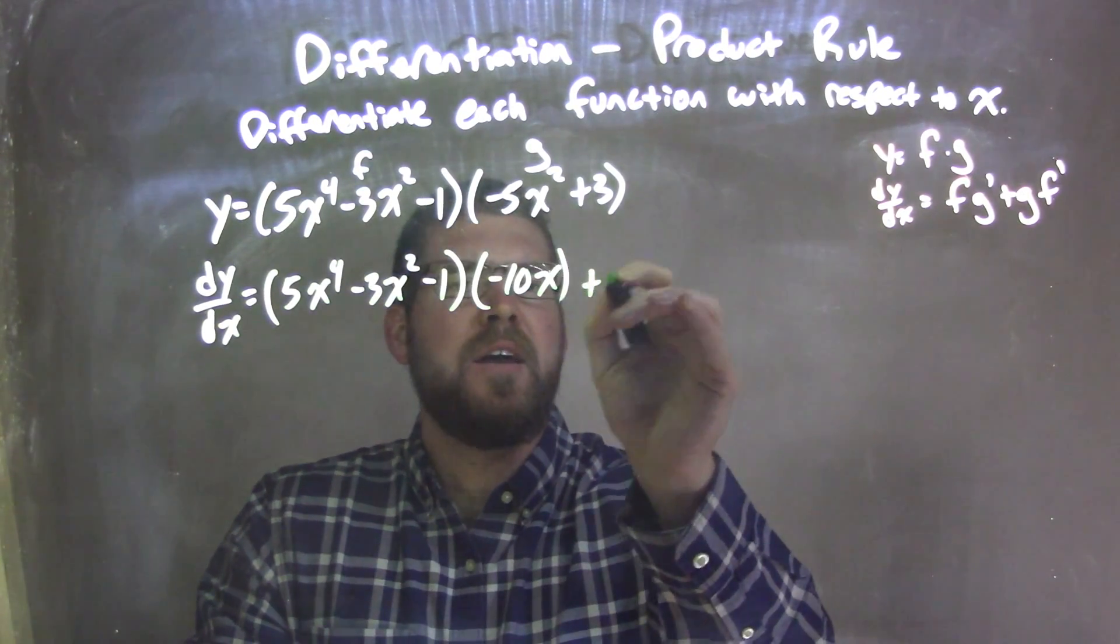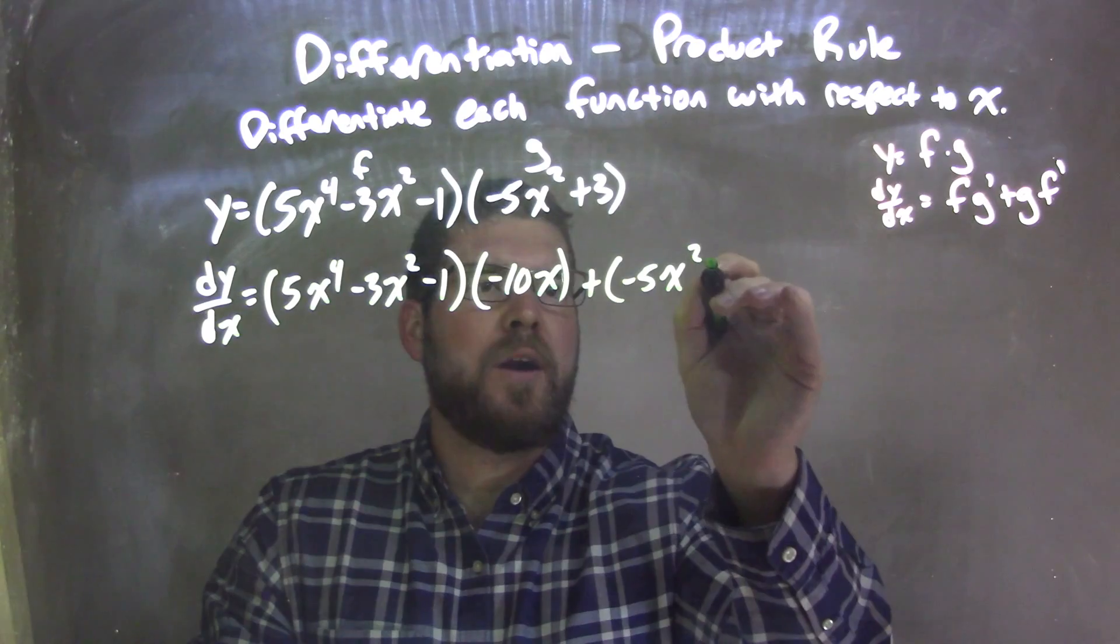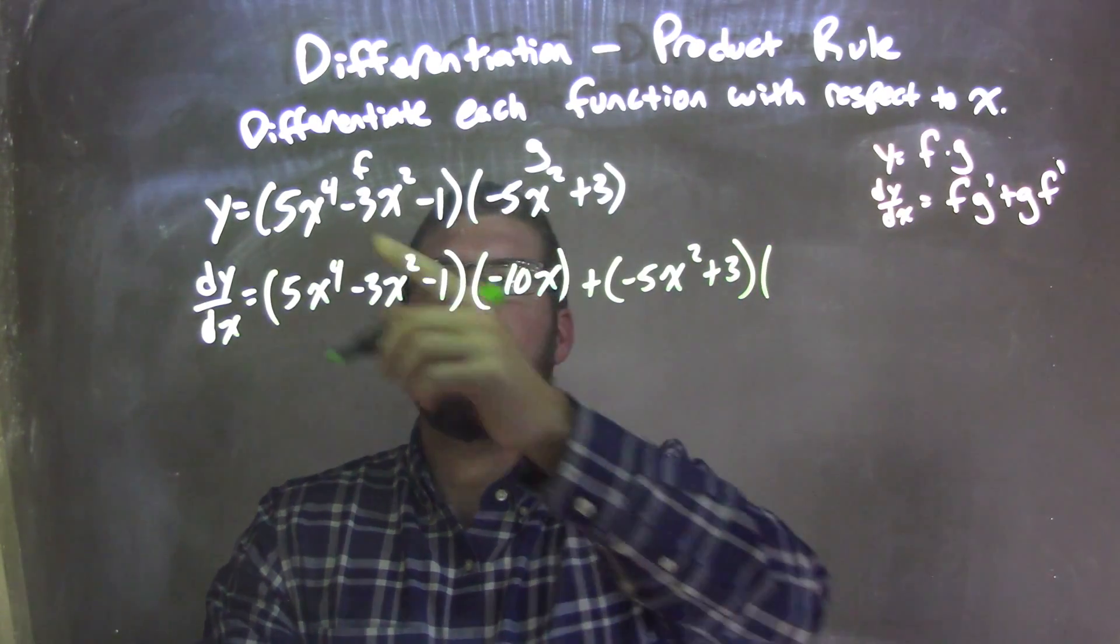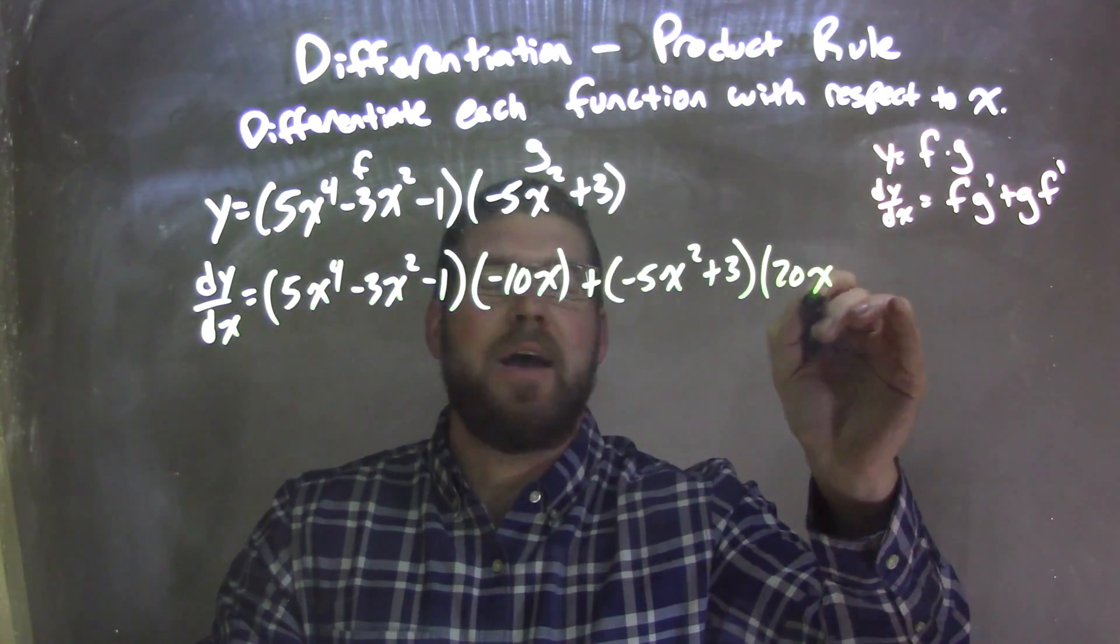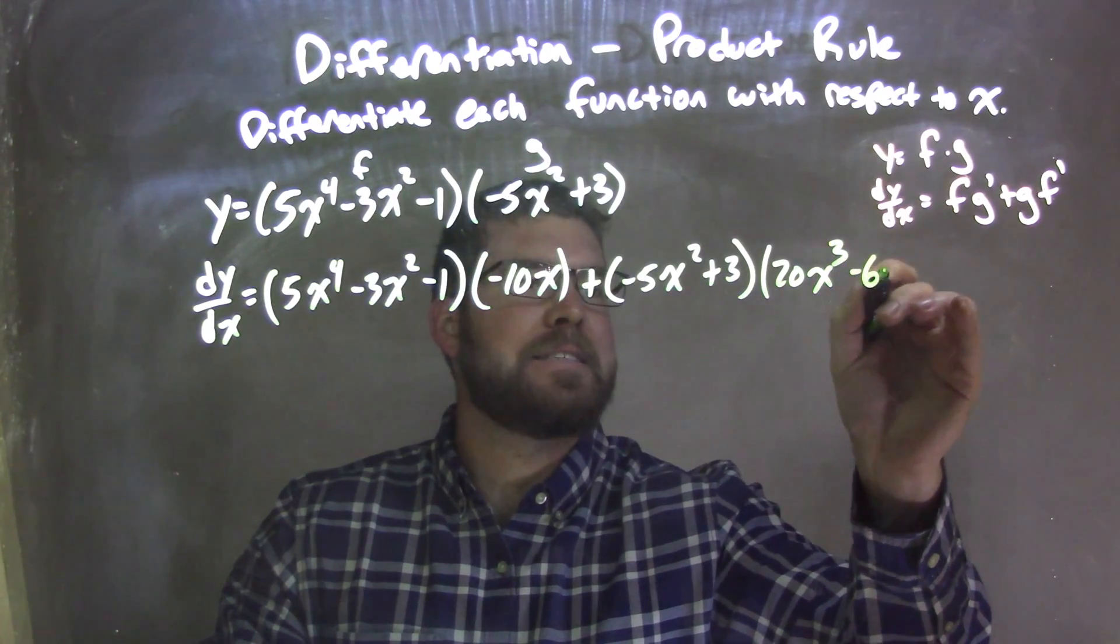Then we add the second part g, negative 5x squared plus 3, times the derivative of the first, which is 20x to the 3rd minus 6x.